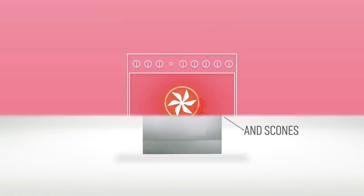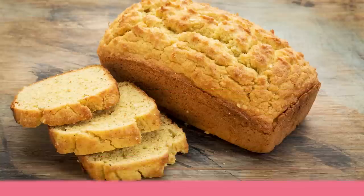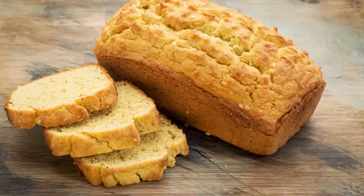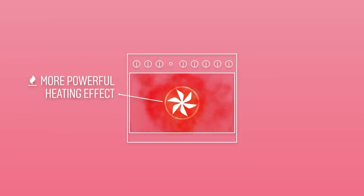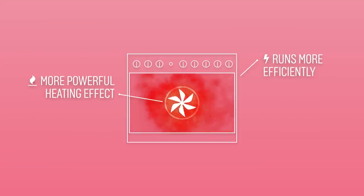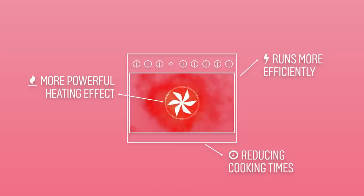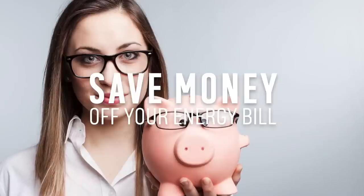A fan oven circulates the heat around more evenly in the oven, which makes it ideal for making bread. A fan oven has a more powerful heating effect and runs more efficiently, which means that cooking times can be reduced, saving you a bit of time and money off your energy bill.